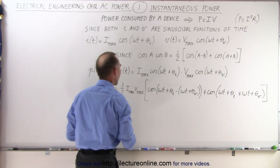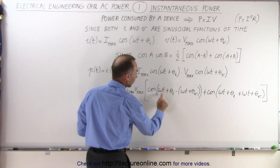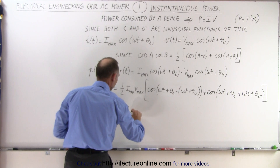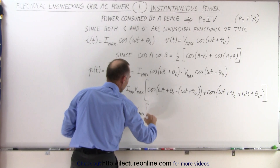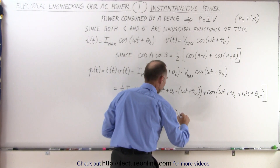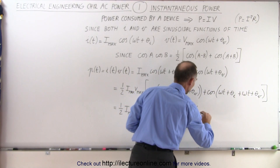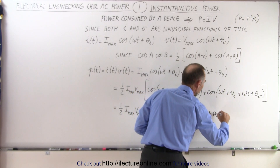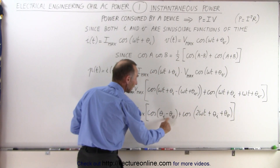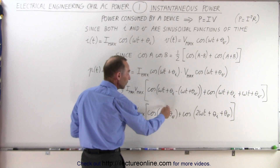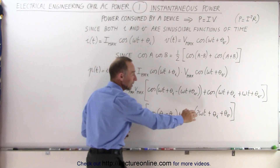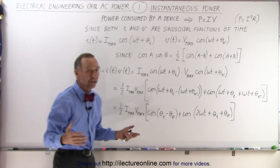All of that is multiplied by one half i_max v_max. Notice that in the first term the omega t's cancel, leaving theta_i minus theta_v. So it becomes one half i_max v_max times the cosine of (theta_i minus theta_v), plus the cosine of (2 omega t plus theta_i plus theta_v). Note that the order of the phase angles doesn't matter: the cosine of a negative angle equals the cosine of a positive angle, and for the sum term the order of addition doesn't matter either.